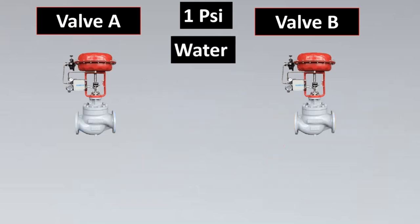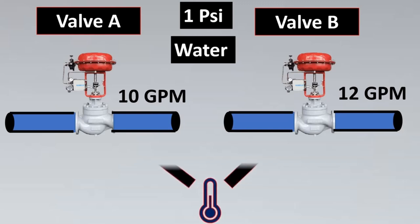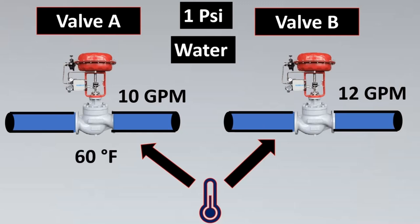Let us select water because it is one of the most available substances and very easy to find at any site or vendor location. Now with the same pressure drop and the same liquid — water for both valves — ideally I should get the same flow rate, but valve A gives 10 GPM and valve B gives 12 GPM. Here another parameter comes into play: temperature. Both valves using water may have different temperatures — perhaps 60°F for one and 150°F for the other. As temperature increases, there is again a difference in flow rate, so we must maintain a constant temperature as well.